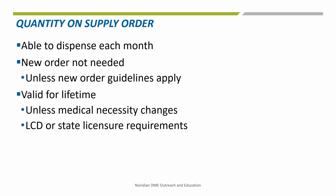The frequency, duration of use, or refill requirement are not needed. So how do suppliers know how many supplies to dispense each month or how long the order is good for? Supply orders are valid for a lifetime unless the medical necessity changes or the local coverage determination, LCD, or state licensure guidelines indicate otherwise. Therefore, suppliers are able to dispense the quantity indicated each month. For example, if the order states 180 catheters, the supplier is able to supply 180 each month. Keep in mind that anything in excess of the normal allowed amounts will need to be justified in the medical records.